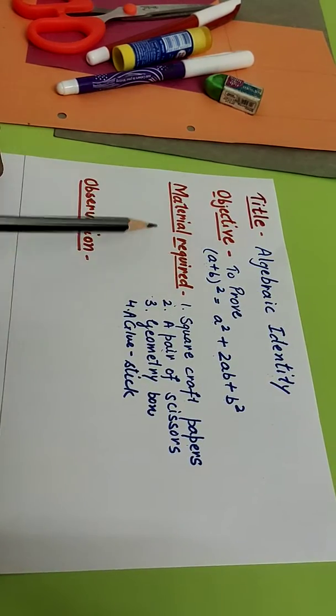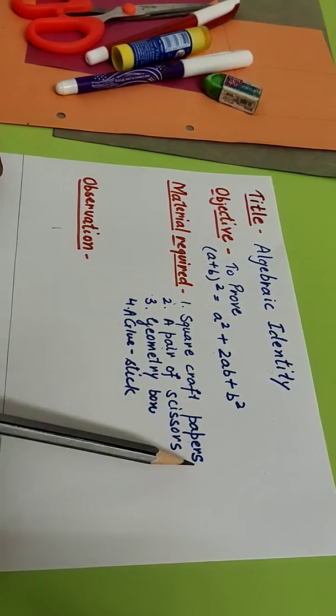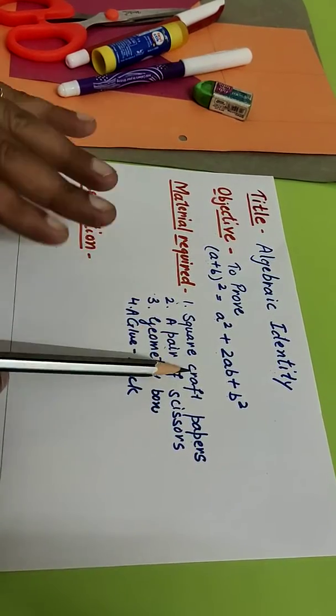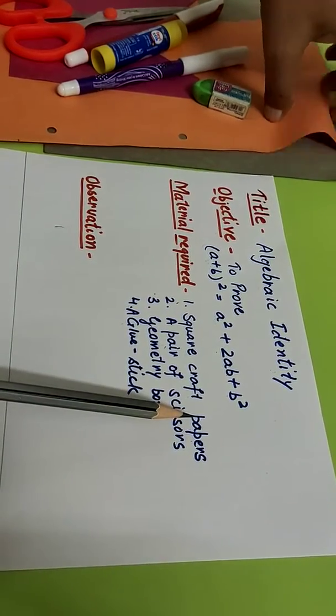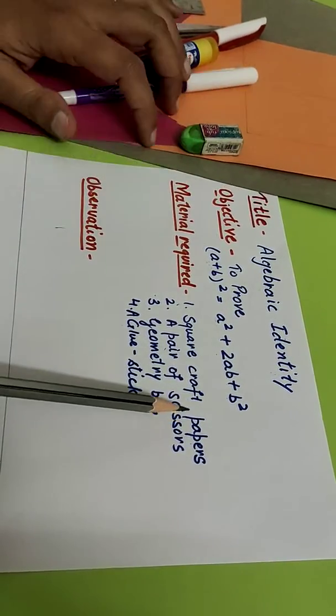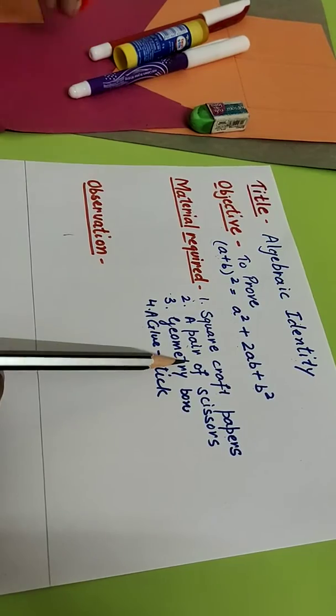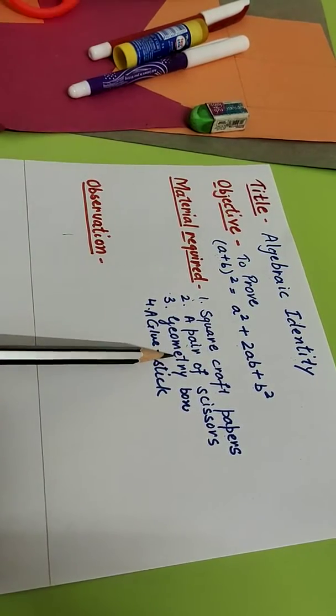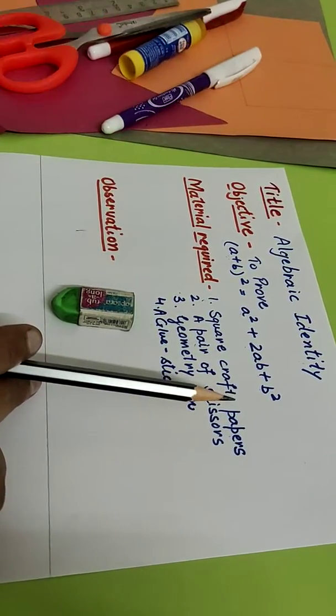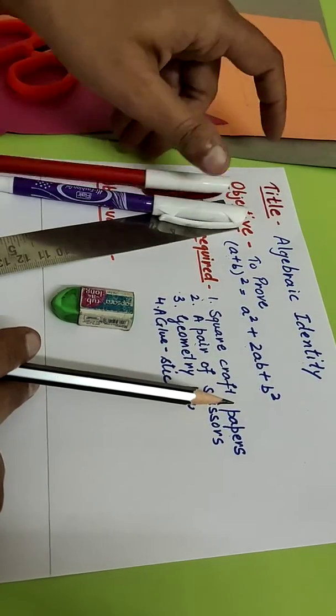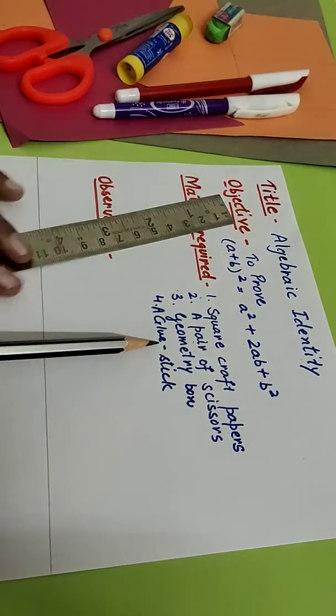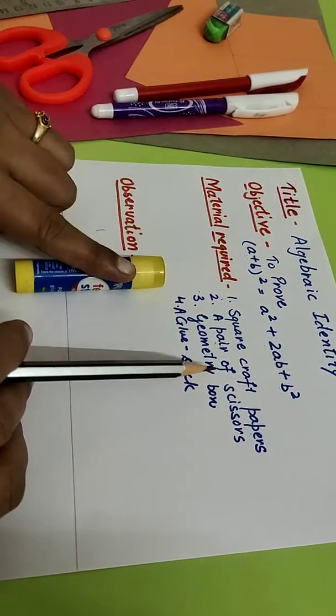To prove this we are going to use some material and that is square craft papers. I have took three different colourful papers, this orange and this grey colour and this pink colour. Next is a pair of scissors for cutting the paper. I have a geometry box because we are using pencil, eraser, scale and any colourful pens, and a glue stick to paste.